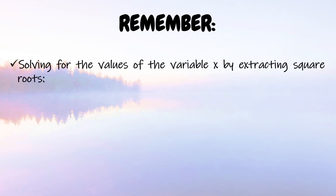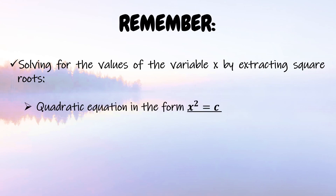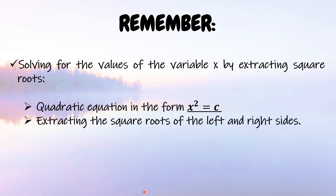Let us summarize what we have learned. To solve for the values of x by extracting square roots: first, the quadratic equation must be in the form x² = c. Then, extract the square roots of both the left and right sides of the equation. The results are the final answers.